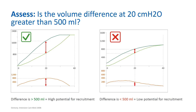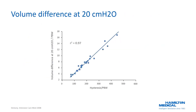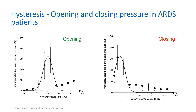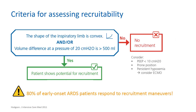There is a strong correlation between the hysteresis — the whole area enclosed by the PV curve — and the difference between inflation and deflation volume at 20 centimeters of water. In patients with high potential for recruitment, the opening pressure on the inflation limb and closing pressure on the deflation limb vary significantly, resulting in a significant volume gain. If the shape of the inspiratory curve is convex and/or the volume difference at a pressure of 20 centimeters of water is greater than 500 milliliters, the patient shows high potential for recruitment and a recruitment maneuver is warranted. If neither criterion is met, the patient has low recruitment potential. Consider maintaining PEEP less than 10 centimeters of water, prone positioning, and if persistent hypoxemia is present, consider ECMO.